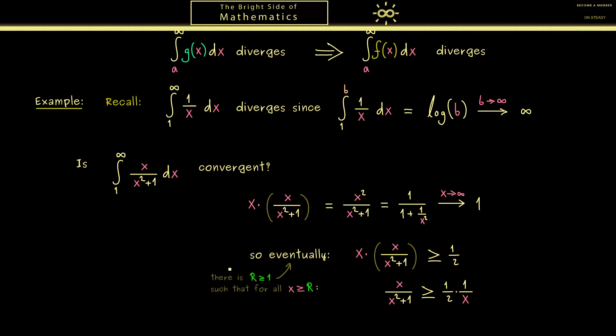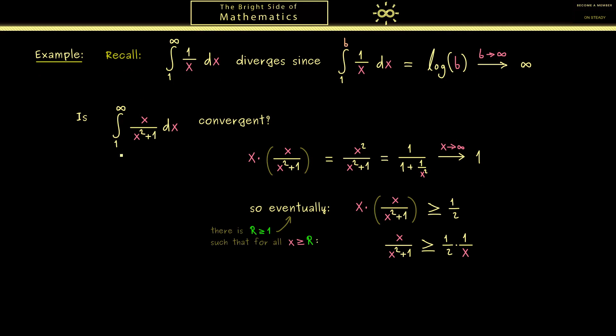So writing this down, we see this integral starting with R is divergent. And there you see applying the minorant theorem is not hard at all when you can produce such an inequality here.